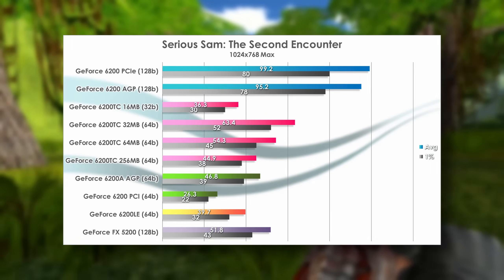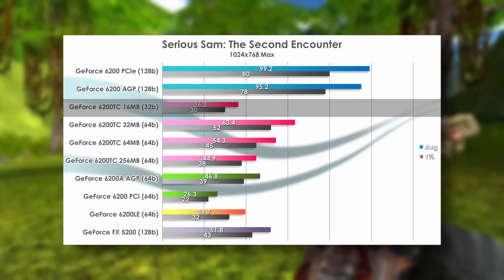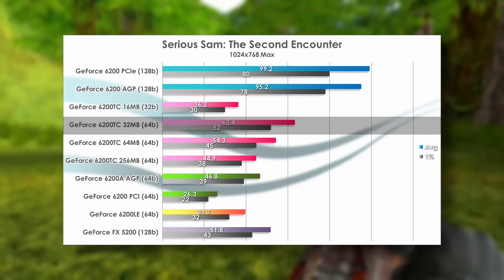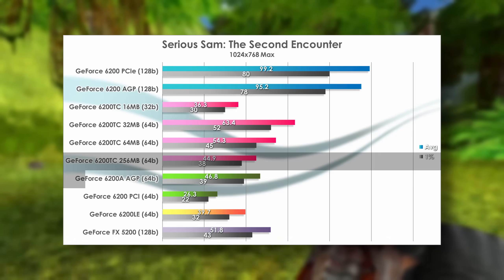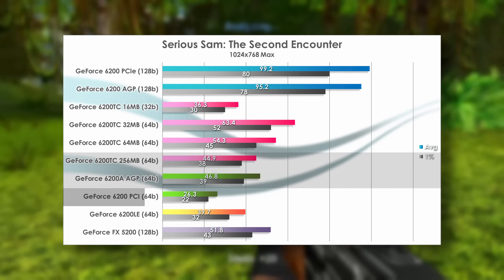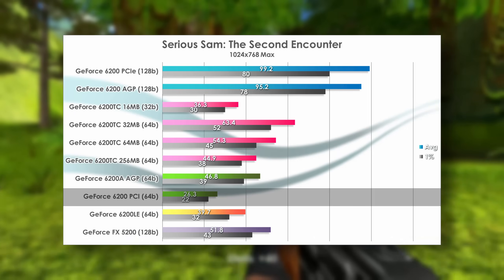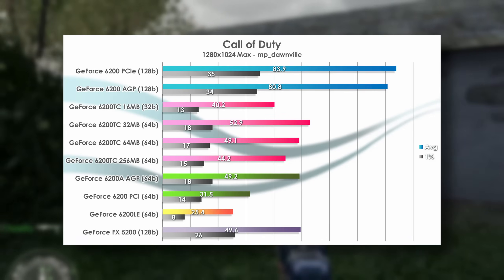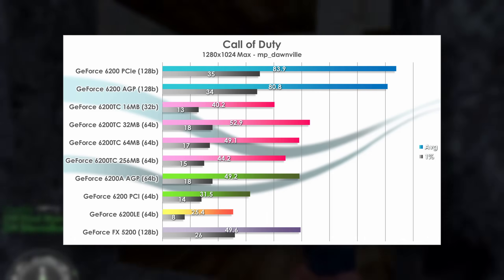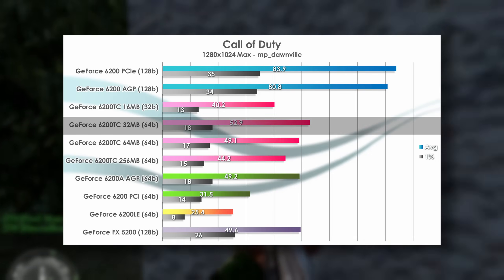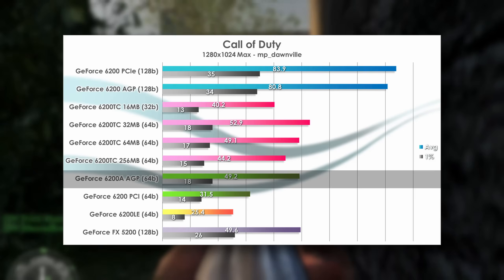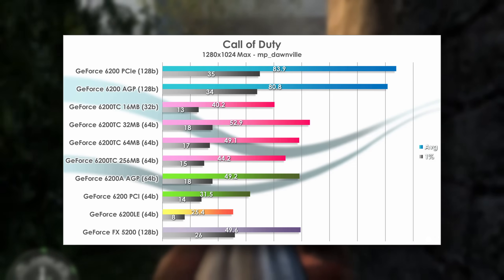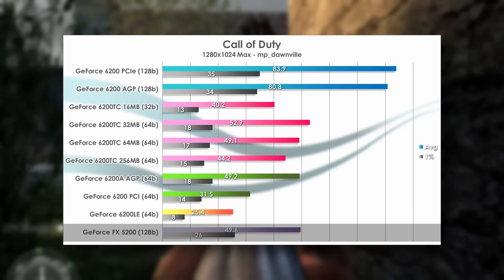Serious Sam: The Second Encounter seems to value memory speed above all else. The 16MB card with its 32-bit memory bus gets an abysmal frame rate, while the 32MB 64-bit card gets above 60fps. The 256MB Turbo Cache card and AGP 6200A score about the same, while the PCI 6200 turns in a disappointing result. The FX 5200 does quite well here. Call of Duty is another fixed-function OpenGL game, and again memory speed is the top priority. The 32MB Turbo Cache card does better than the rest, and the AGP 6200A is tied with the 64MB card and the FX 5200. The 1% lows are pretty terrible for most cards, with the exception of the FX 5200, which looks a little better in that regard.